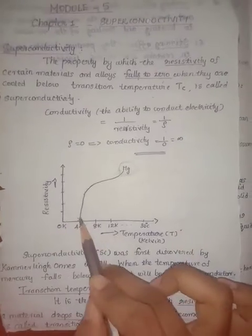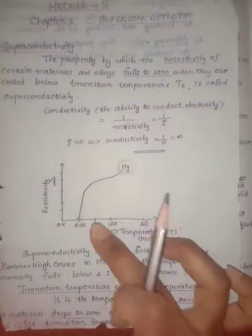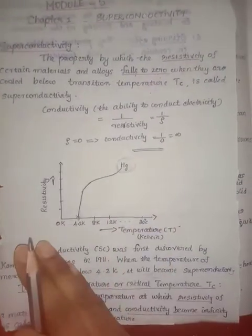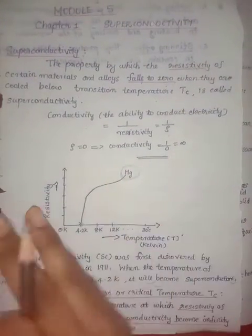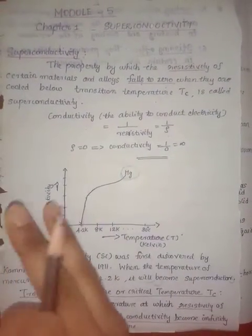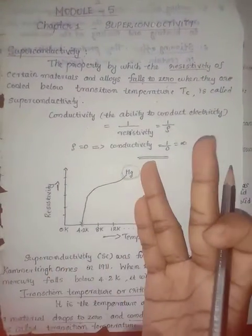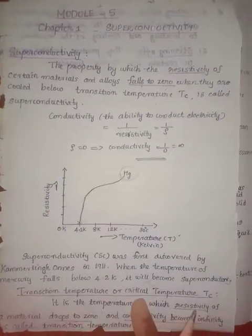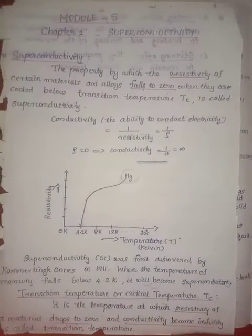Resistivity is zero and conductivity is infinity at that particular temperature — that is why the material is superconducting. Above that temperature, it is a normal material. So that temperature is known as transition temperature or critical temperature.